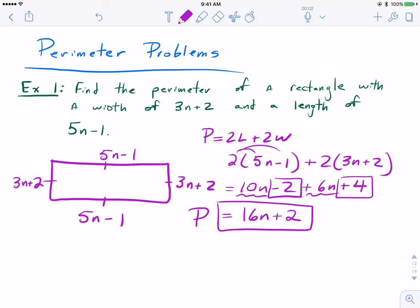You simply just plug a 5 in for n, making up a problem on the go here, and we get 82. 16 times 5 is 80, plus 2 is 82. So you're showing that you can combine like terms and that you can evaluate an expression to find a numeric answer. This has been a perimeter application on polynomials. Thank you for watching.